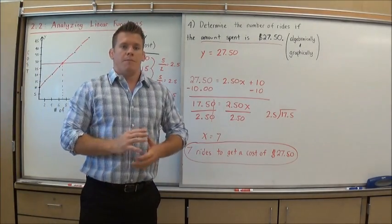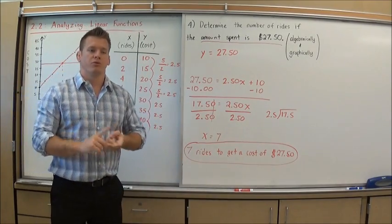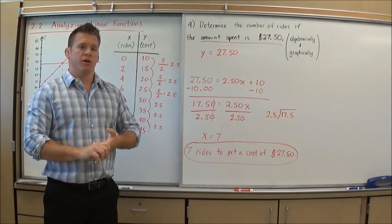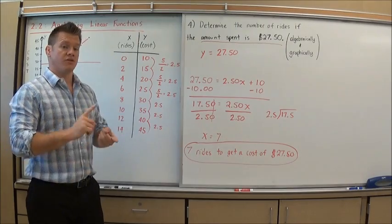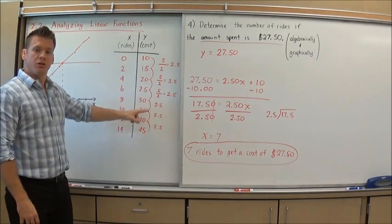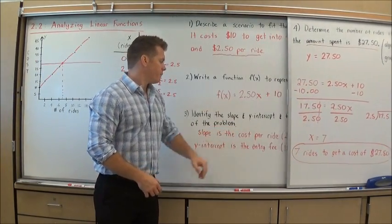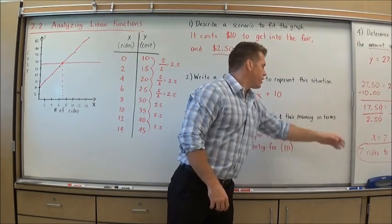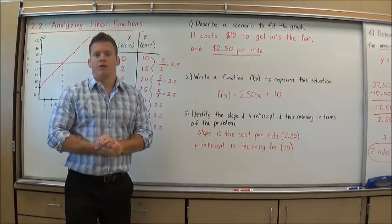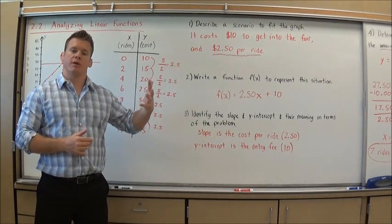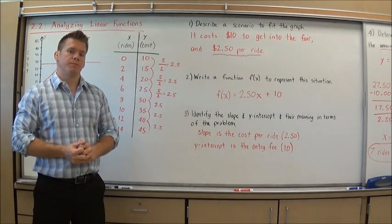What we're seeing here now is reviewing what we did in the section before with using tables, graphs, and equations in problem situations, but now also being able to identify important details in regards to this linear function, which is the slope, which will always represent our change, our constant change, our first differences, and our y-intercept, which will always represent the starting point in our problem. In this case, the entry fee. When I deal with a linear situation, I look for the change or the rate to be the slope, and I look for that starting value or the answer when the input is zero.